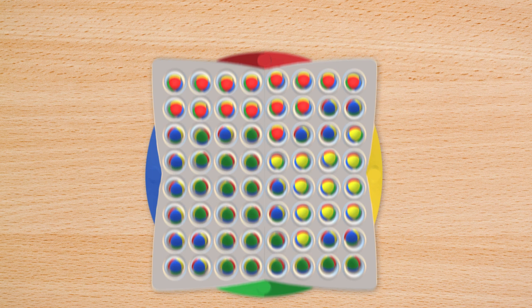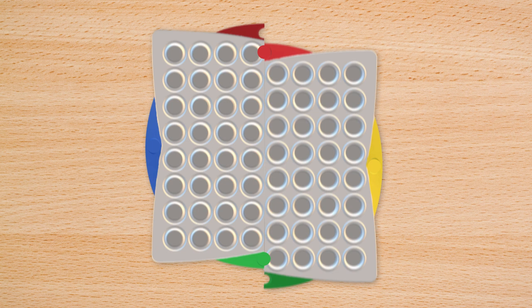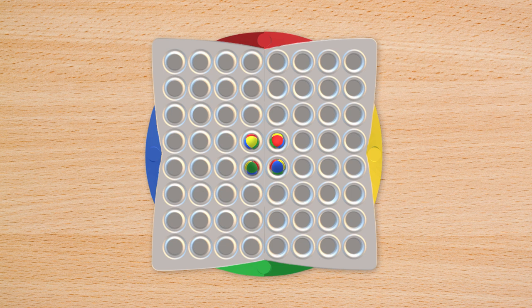Ready to play? Assemble the game board and place it in the center of the table. Place a Roll It ball of each color in the center of the board. Pick a color and sit next to it. Choose a player to go first.